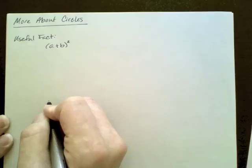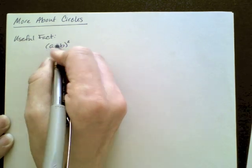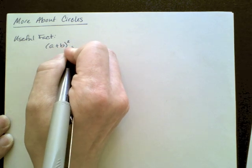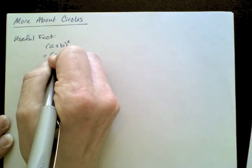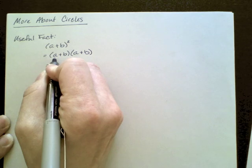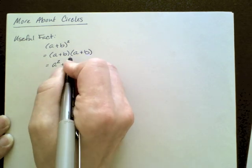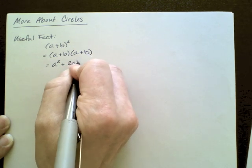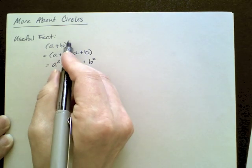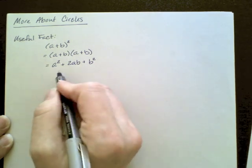For any numbers a and b, if you have (a+b) squared, you cannot distribute the exponent. What you can do is remember that squaring is multiplying something times itself. So this equals (a+b) times (a+b), which equals a squared plus ab plus ba plus b squared. That's 2ab plus b squared. So (a+b) squared equals a squared plus 2ab plus b squared for any values of a and b.